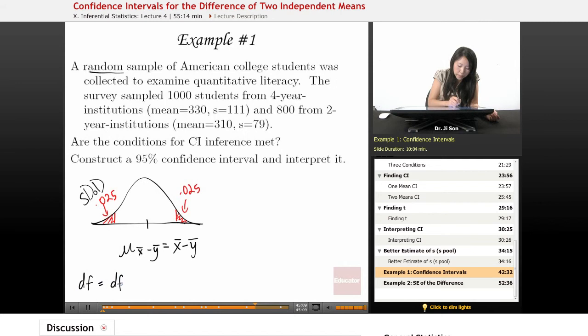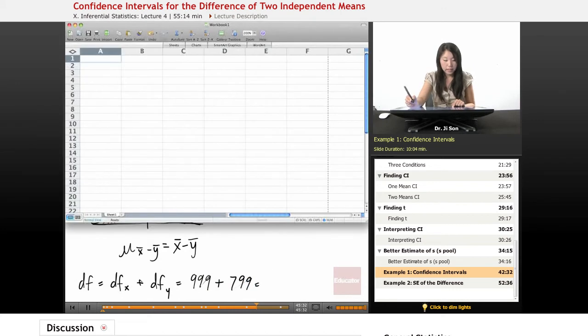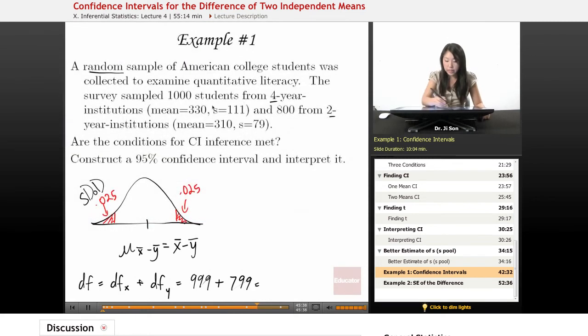It's going to be the degrees of freedom for x, and I'll call x the four-year university guys, and the degrees of freedom for y, the two-year university guys. And so that's going to be 999 plus 799. And so it's going to be 1,800 minus 2, so that's 1,798. So we have quite a large degrees of freedom.